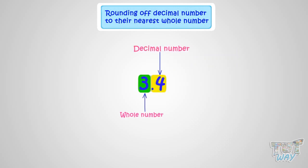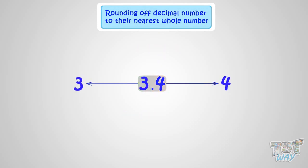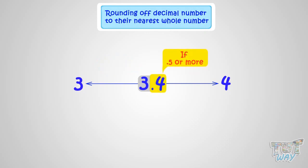And it is somewhere between 3 and 4. And if we have to round it to the nearest whole number, there are two options: either round it down to 3 and remove the decimal portion, or round it up to the next whole number, which is 4. The rule is: if the decimal portion is 0.5 or more than 0.5 — that is, if the decimal number is more than a half — we round it up, meaning the number is more close to the next whole number.